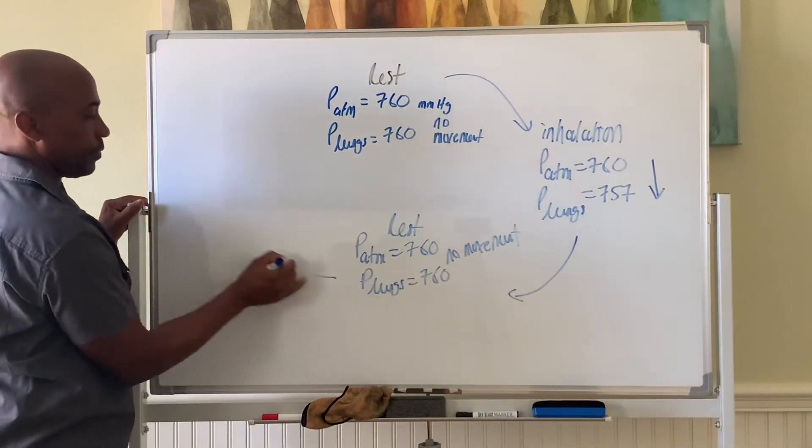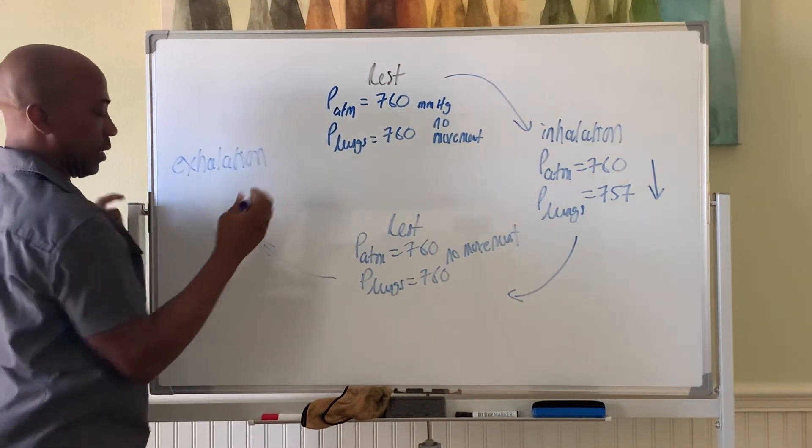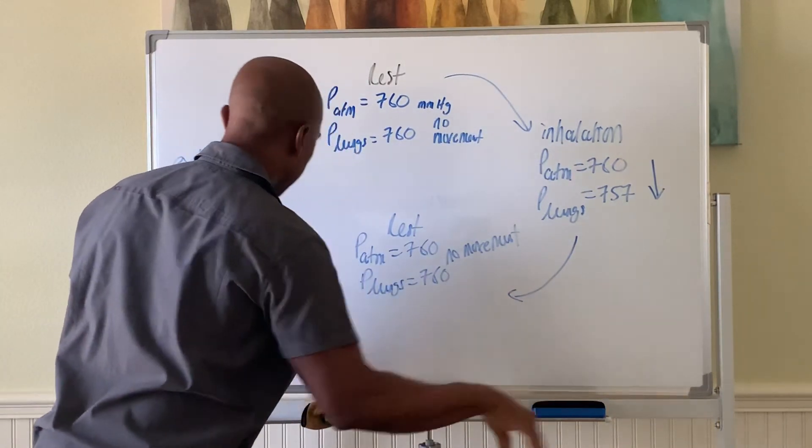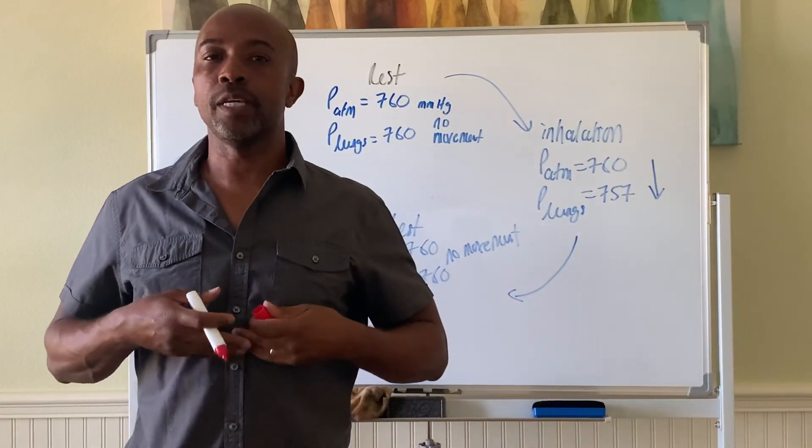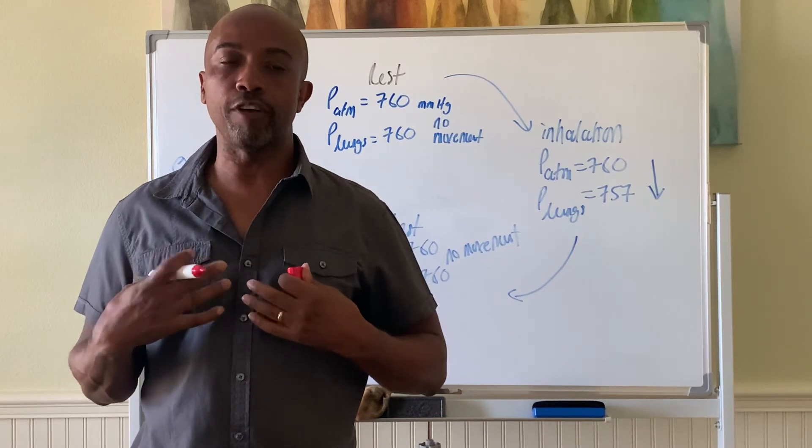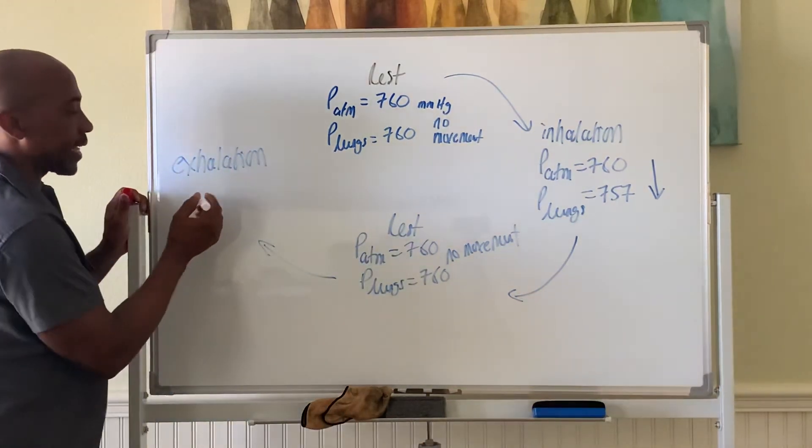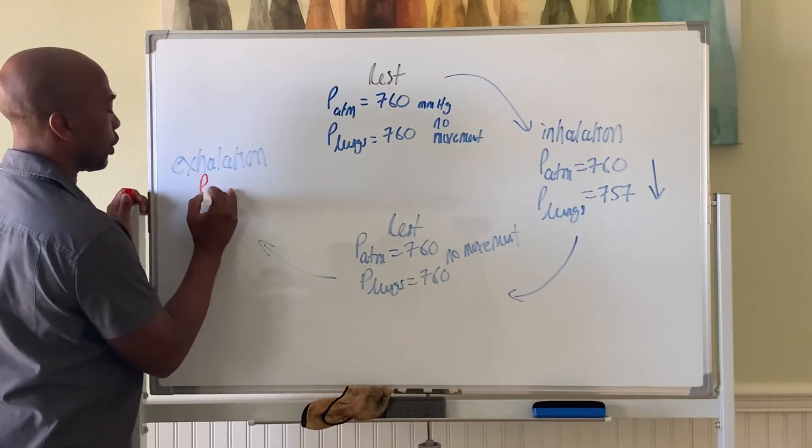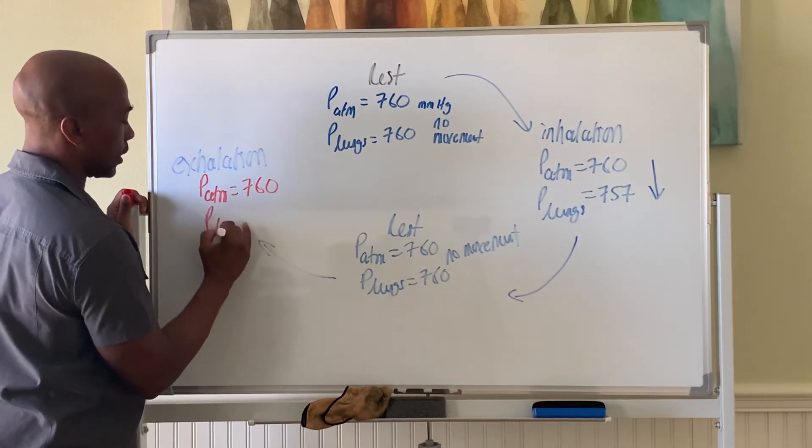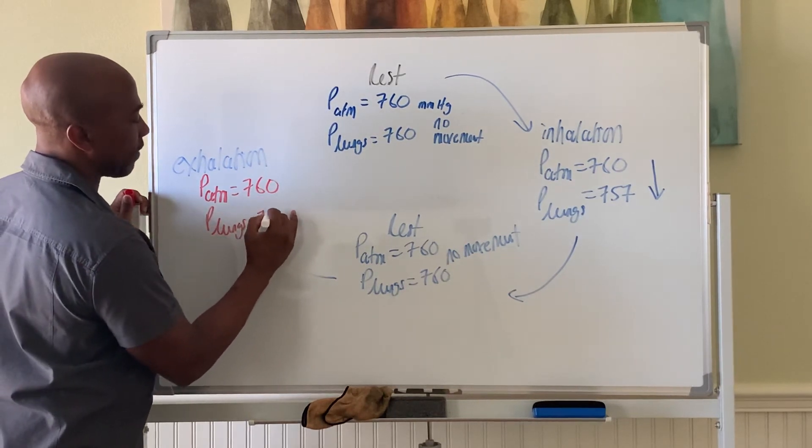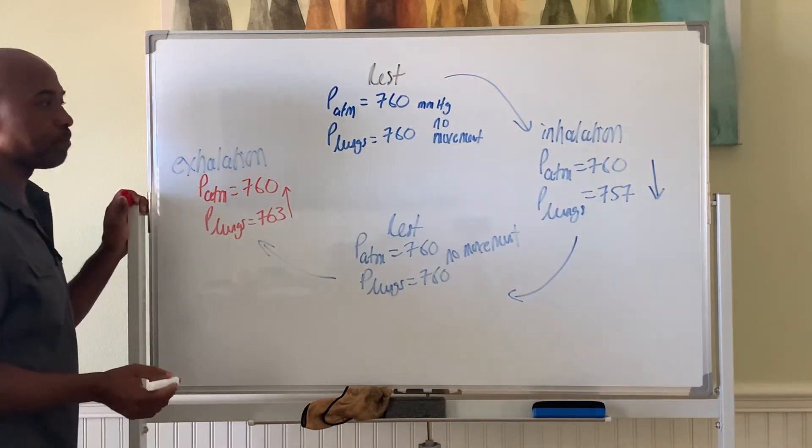And then to exhale, during exhalation, you now, the diaphragm will come back up, your ribs will drop down. And now the volume in the lungs will decrease, which will cause the pressure to increase. So here, during quiet exhalation, the pressure again in the atmosphere, the room is always 760. And now the pressure in the lungs will go up to around 763. And so the air will leave the lungs and flow out in bulk until the back to here.